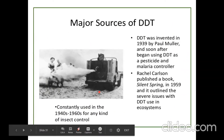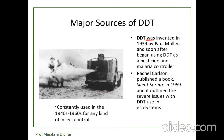DDT was invented by Paul Müller in 1939 and soon after began to be used as a pesticide and malaria controller. Rachel Carson published a book called Silent Spring in 1962, which outlined severe issues with DDT use in ecosystems. DDT was used to control insects from the 1940s to 1960s.